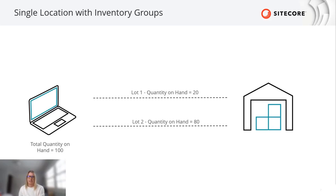In any of the scenarios I covered, you can see the flexibility with determining where order items are fulfilled from, and therefore inventory decremented from. You can use the data on the order in OrderCloud, or integrate with your OMS to finalize routing the order for fulfillment.